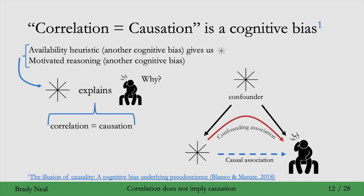Motivated reasoning is where we have some worldview that we want to come up with reasoning to justify. An example of motivated reasoning in this case: say that I don't enjoy spending time with my in-laws. I might be motivated to attribute my headache to the time that I spent with my in-laws earlier that day. I might say I got a headache because I spent time with my in-laws, so I probably shouldn't hang out with my in-laws in the future — it gives me a reason to not do what I don't want to do.